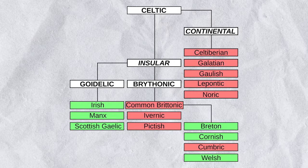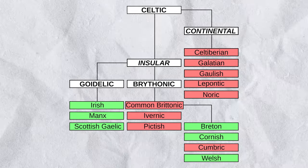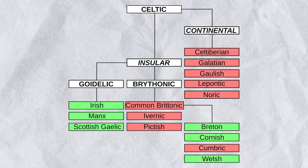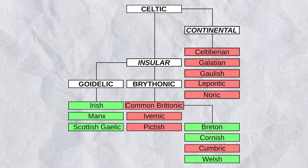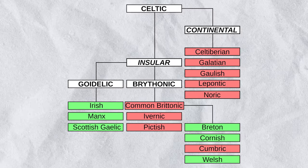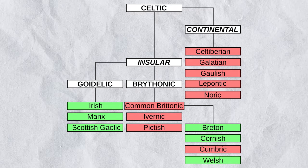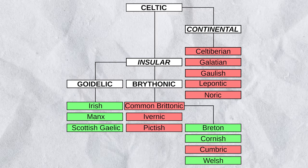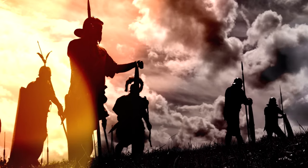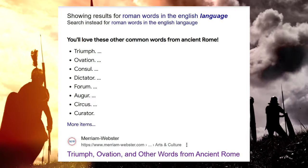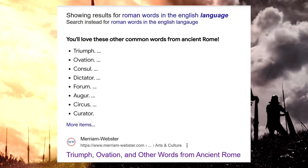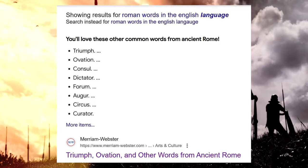The Goidelic languages make up the second branch of insular Celtic languages, namely Irish, Scottish Gaelic, and Manx — the latter spoken on the Isle of Man. So the people of Ancient England largely spoke a Celtic Brythonic language prior to the Roman invasion. After the Romans invaded, Latin became the main language of administration, trade, and the military.